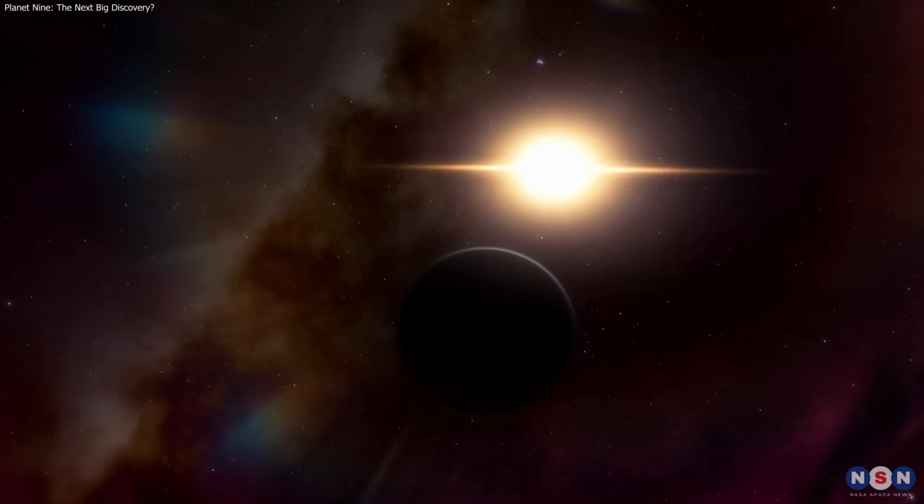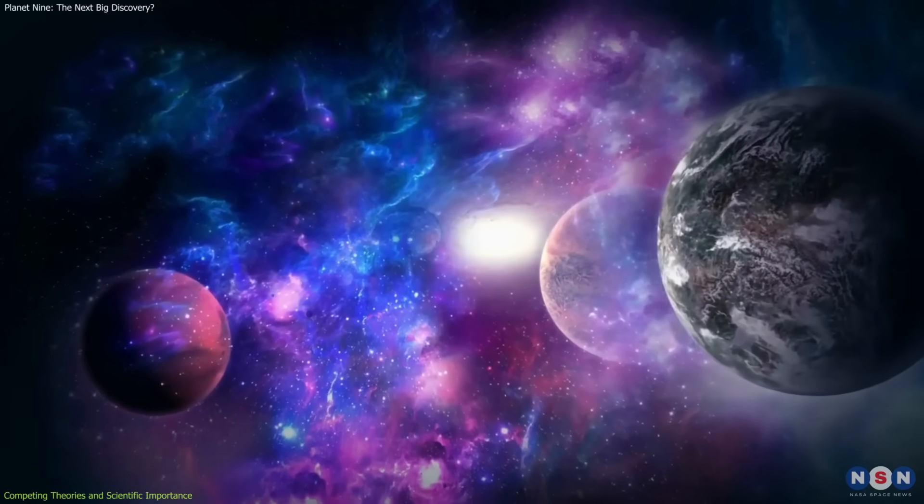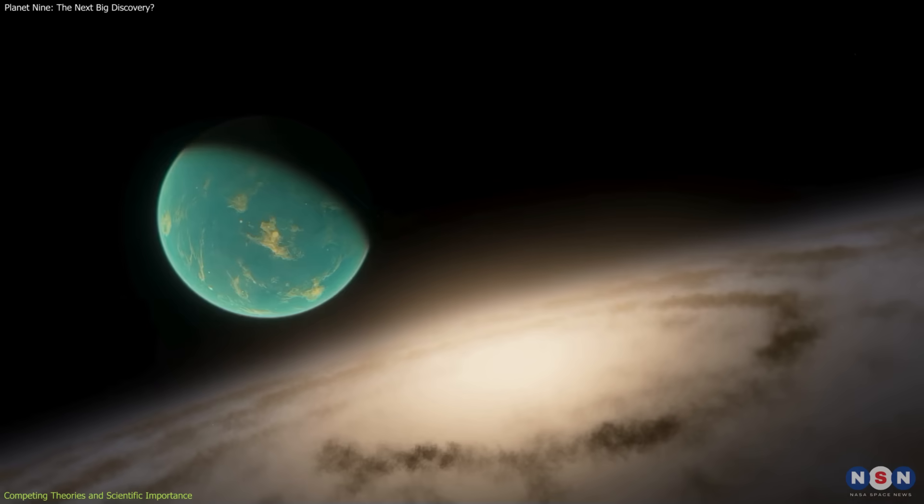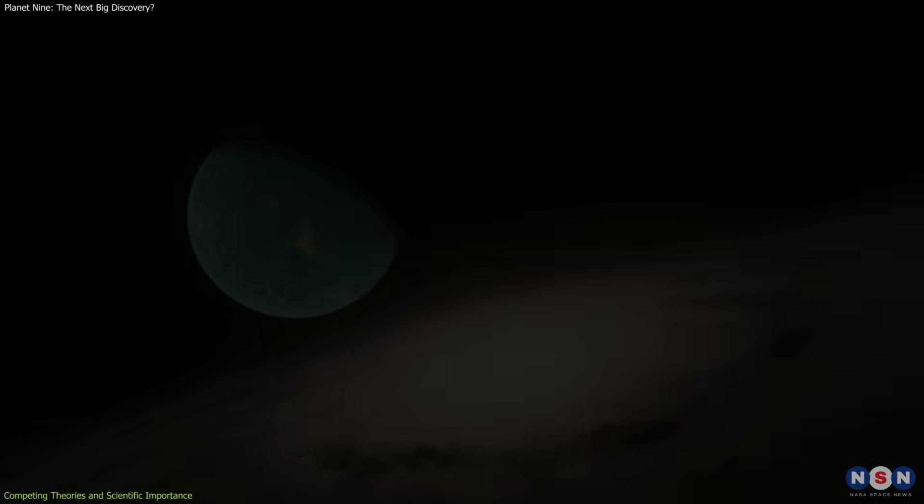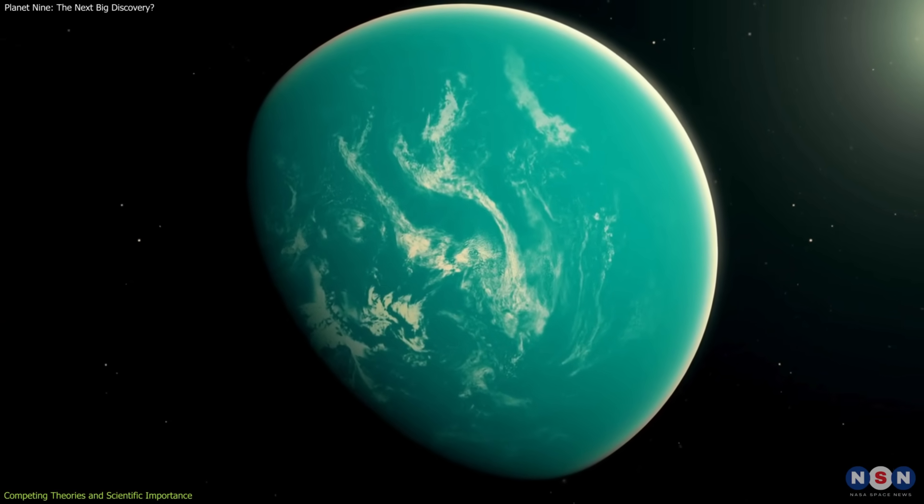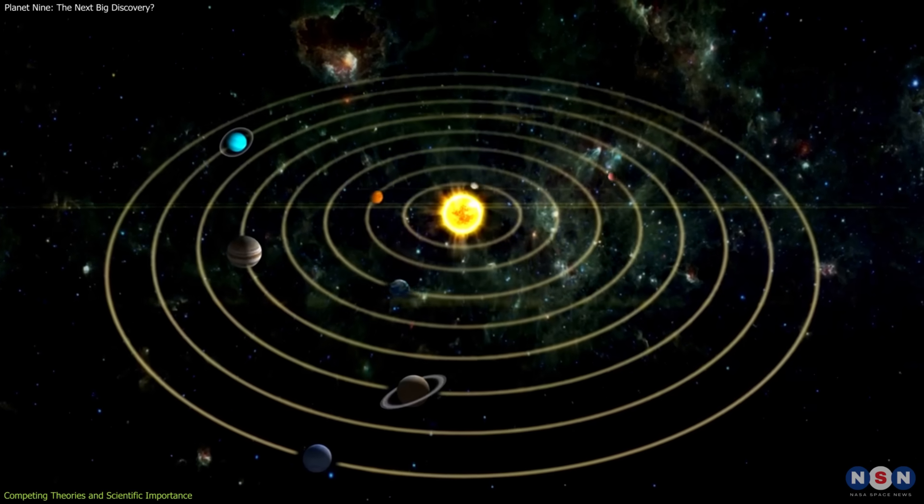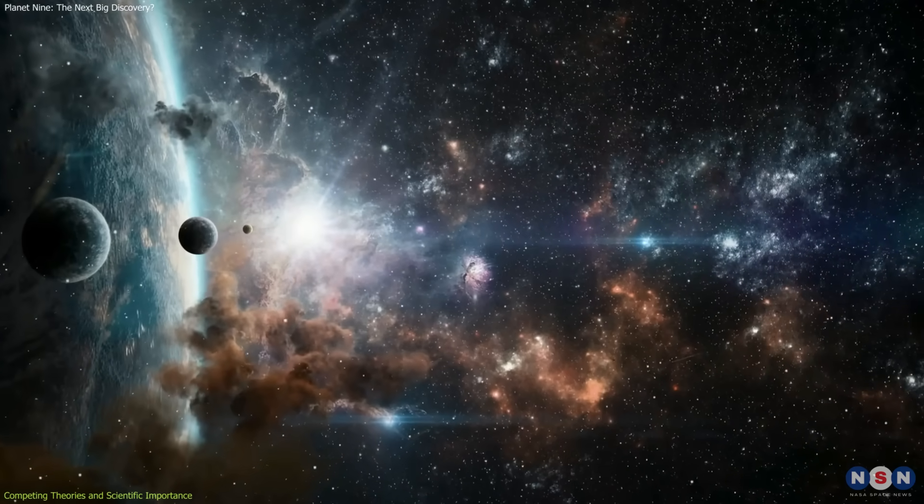The possibility of a 9th planet is not just a curiosity. It touches on the fundamentals of planetary science. If such a world exists, it could be the solar system's missing super-Earth, a type of planet common around other stars but absent here. Confirming it would align our system more closely with the pattern seen elsewhere in the galaxy.